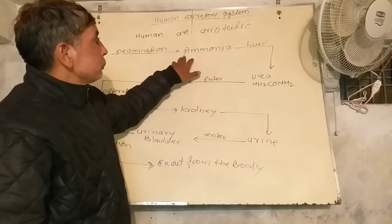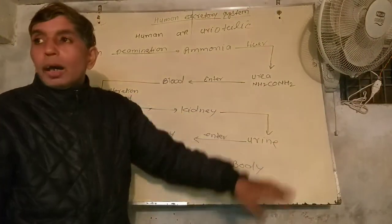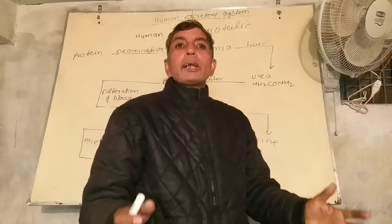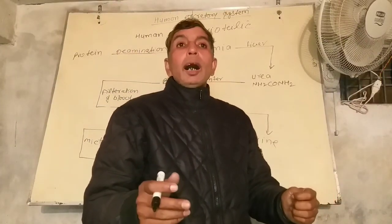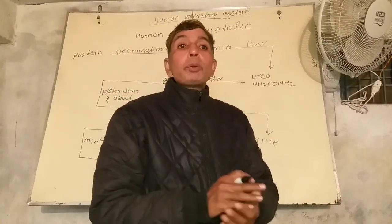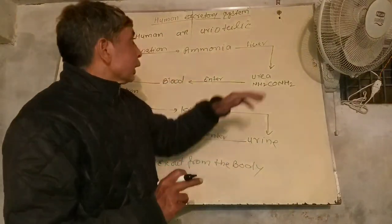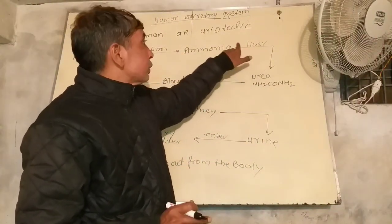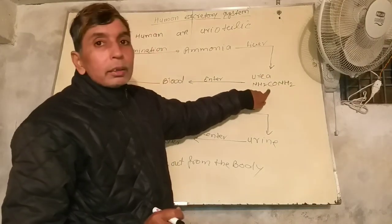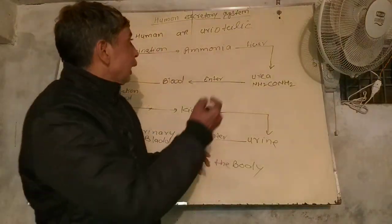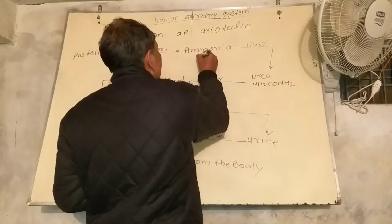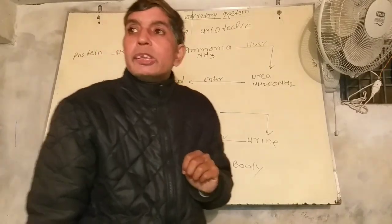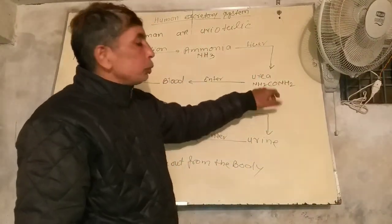Through deamination of protein, there is formation of ammonia. When deamination of protein occurs, our body has ammonia. Ammonia is very toxic for the human body. The molecular formula of ammonia — you already know — has three hydrogens. Ammonia is basic in nature, and it is converted into urea.